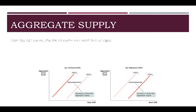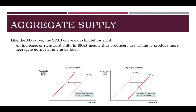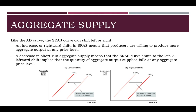Just like all the curves we've talked about — aggregate demand, supply and demand — the short-run aggregate supply curve can shift left or right. For right now, let's just worry about the short-run curve. Any increase in aggregate supply means that producers are willing to produce more aggregate output at any price level. As the price level in the economy goes up, producers are willing to produce more goods, and that will mean a rightward shift in short-run aggregate supply. A leftward shift means that the price level in the economy is falling, and businesses are no longer willing to produce at the same level of output, so the curve will shift left, as you see in the panel on the left.